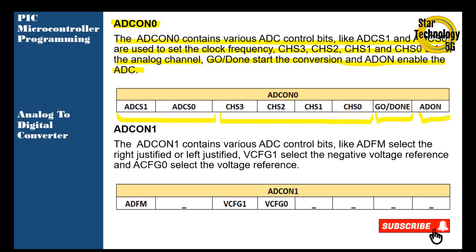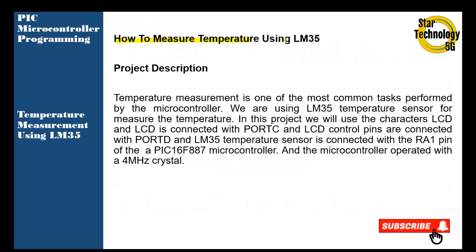ADCON1 contains various ADC control bits. ADFM selects right justification or left justification. ACFG1 selects the negative voltage reference and ACFG0 selects the positive voltage reference.